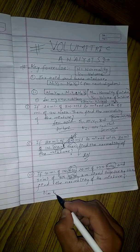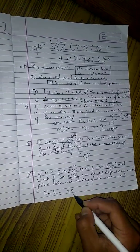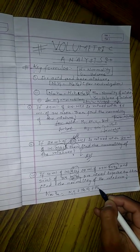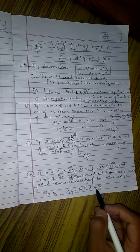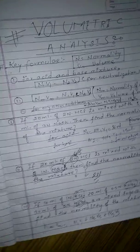That is normality of mixture. NmVm equals N1V1 plus N2V2 plus N3V3. There are three acids, so now look at here.